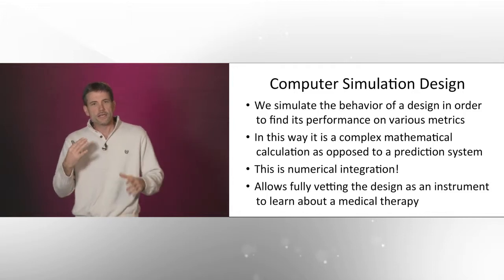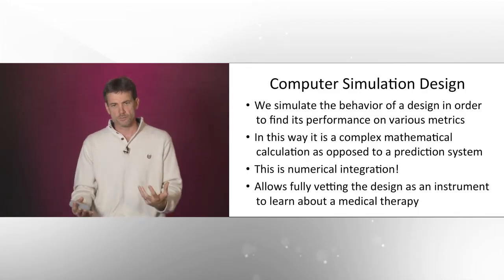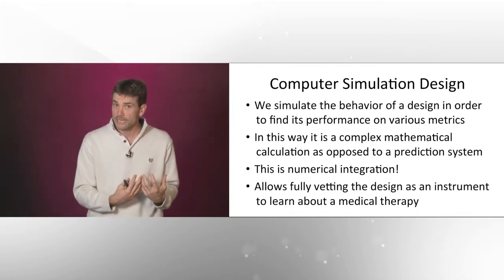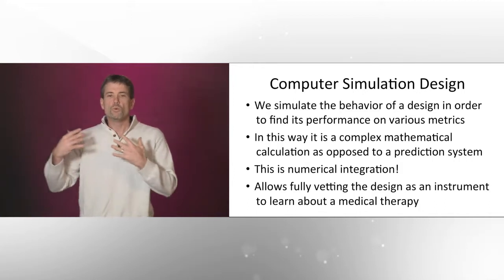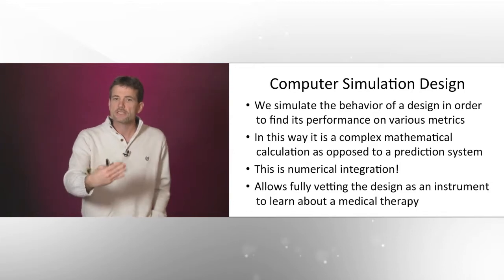In a standard classical trial, it has non-moving parts: a fixed sample size, two or three arms, and a straightforward final analysis. We can do those mathematical calculations on pencil and paper. We don't need to simulate those to understand power, the number of subjects, or the likelihood of a type one error. As soon as the design gets complicated — like the design of an airplane — we need much more sophisticated mathematical tools, and computer simulation is our tool to do that.